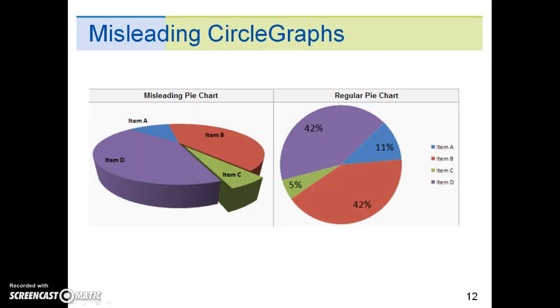Here is another example of a misleading graph. In the graph on the left, item C appears to be at least as large as item A, whereas in actuality it is less than half as large.